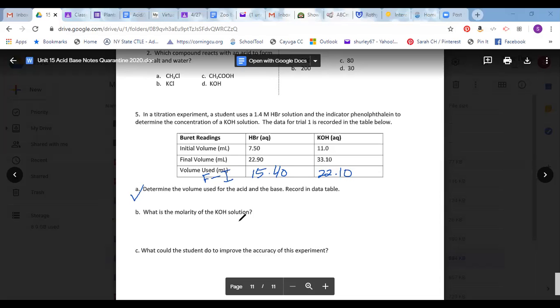Letter B, what is molarity of the KOH solution? So MAVA equals MBVB. You might be looking around for MA. It's up in the little description of the problem. So 1.4 times VA 15.4 equals X times 22.1. X equals 0.98 molar.